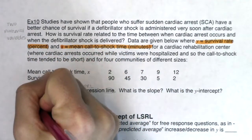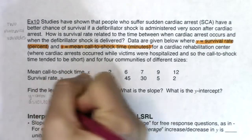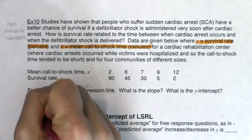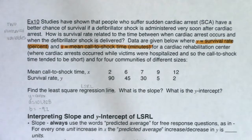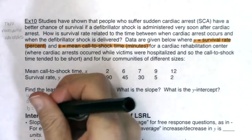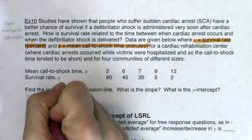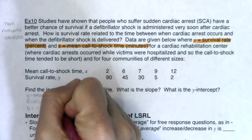Going to two decimal places — actually let me be precise. The slope rounds to negative 9.296, and I'll write down all three lines from the calculator before building the full answer.